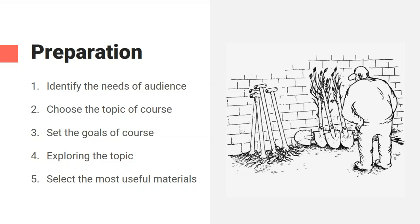Third step: set the goals of your microlearning course, and answer the following questions in the title and description. Three main questions: first, why do they need to learn it? Second, how does it help them in their work? And third, how can it improve their skills?